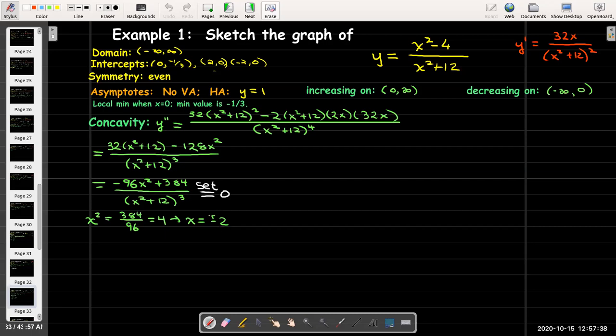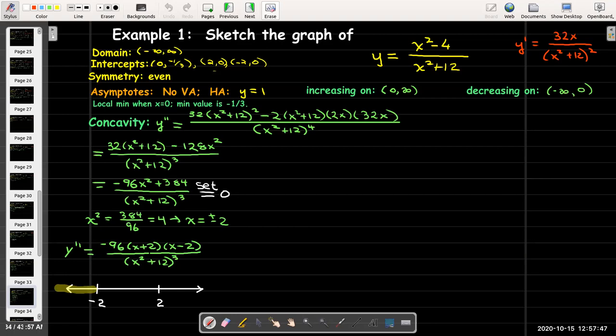Those are the x values where the concavity might change. Let me go ahead and rewrite the second derivative in factored form. The negative 96 x squared plus 384, I can factor out negative 96. That'll give me x squared minus 4. And x squared minus 4 can be factored as (x + 2)(x - 2). So I draw a number line and put in the values where the second derivative is zero.